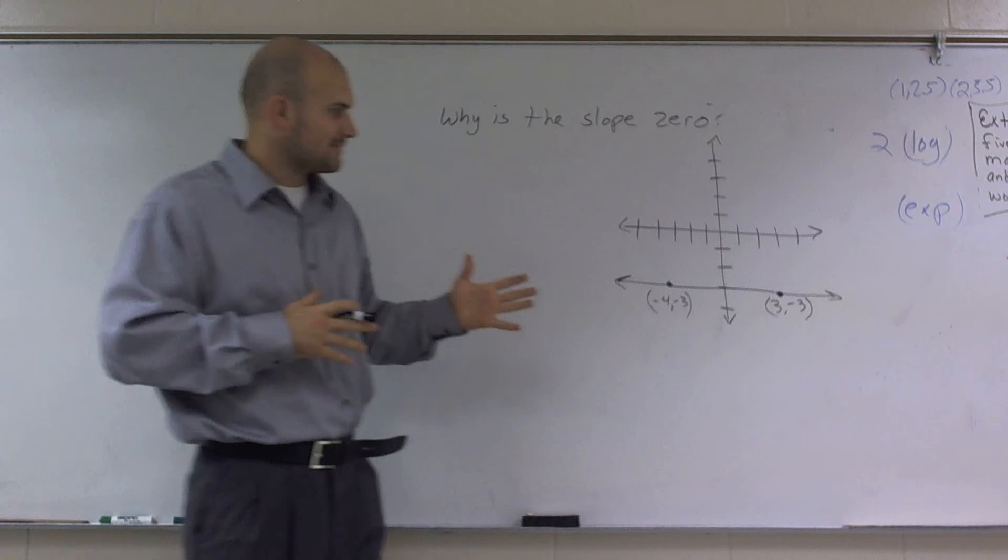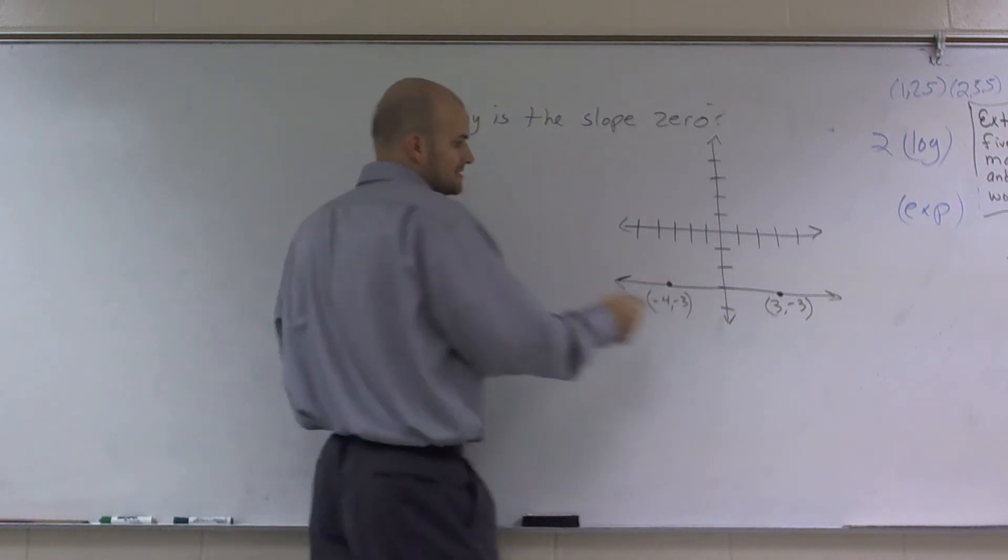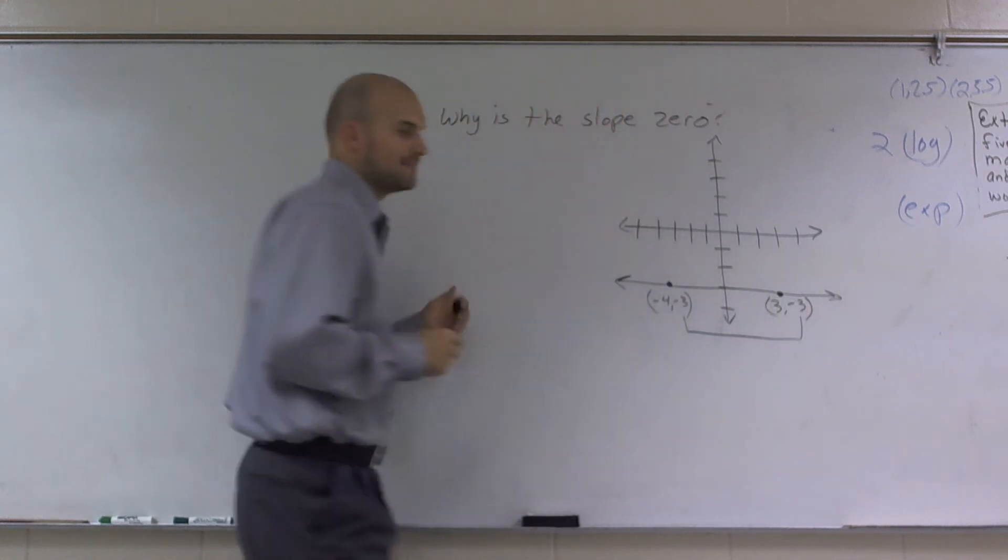And so we're given two points, negative 4 comma negative 3, and 3 comma negative 3. And one thing we notice is that our y-coordinates are both the same, negative 3.